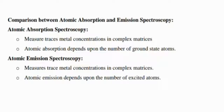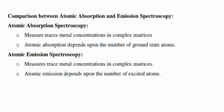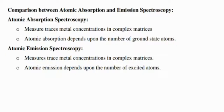In comparing atomic absorption and emission spectroscopy: atomic absorption spectroscopy measures trace metal concentrations in complex matrices and depends upon the number of ground-state atoms, while atomic emission spectroscopy measures trace metal concentrations in complex matrices and depends upon the number of excited atoms. These are the advantages, disadvantages, and applications of atomic absorption and emission spectroscopy. I hope you completely understood it — please like and subscribe, and wait for another important new topic in analytical chemistry. Thanks.